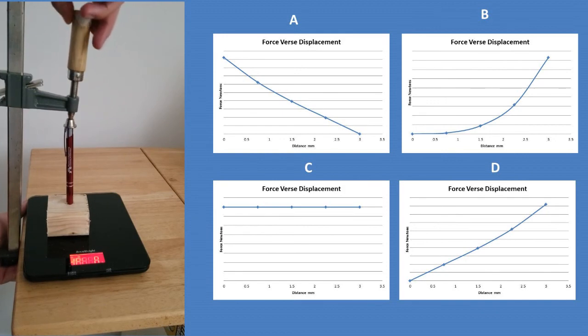What will the graph look like? Take a look at these graphs and predict which graph will represent the force versus displacement of the pen being compressed. Will it be A, B, C, or D?